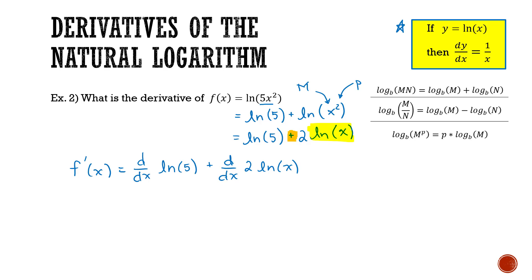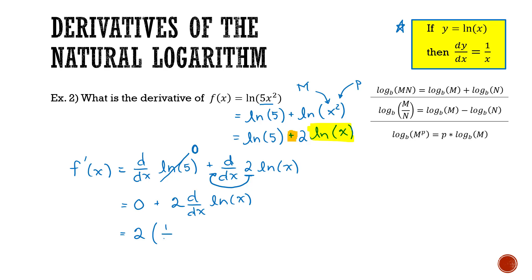The derivative of ln of 5 is 0, since it's a constant. For the second term, using the scalar rule, I have 2 times the derivative of ln of x, which is simply 1 over x. So I have 2 times 1 over x, which simplifies to f prime of x equals 2 over x. That is the final answer.